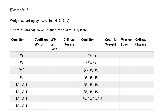Example 3. We have the weighted voting system with a quota of 6, and there are 4 players. Their weights are 4, 3, 2, and 1. We want to find the Banzhaf power distribution of this system.